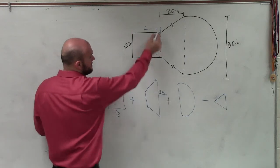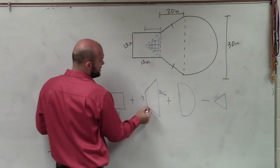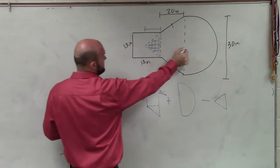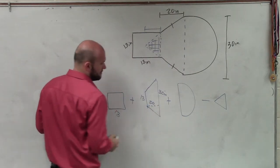If that's 30, this length is 13. And do we know the height? The height from here to here is 20.